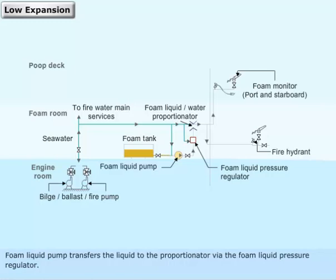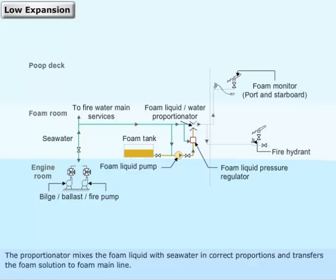Foam liquid pump transfers the liquid to the proportionator via the foam liquid pressure regulator. The proportionator mixes the foam liquid with seawater in correct proportions and transfers the foam solution to the foam main line.